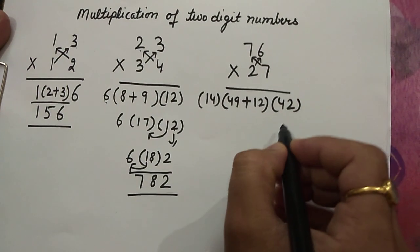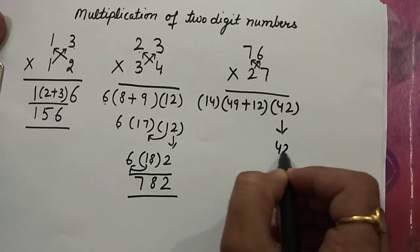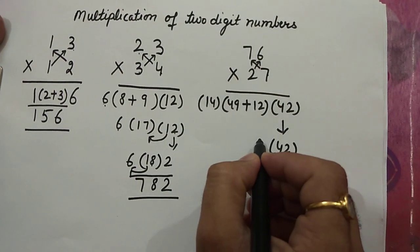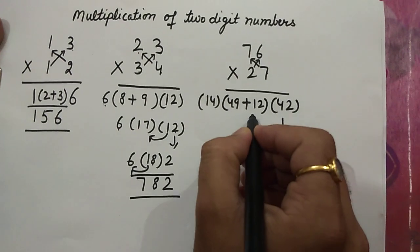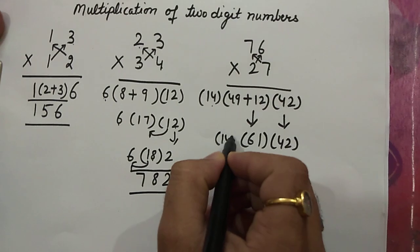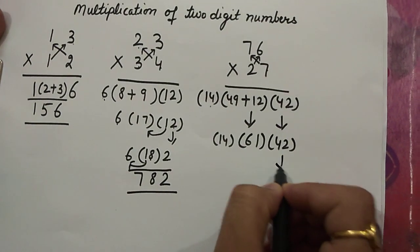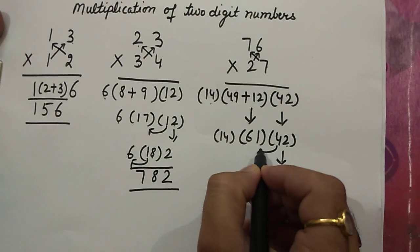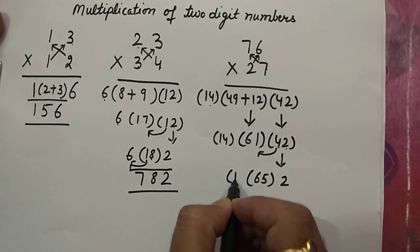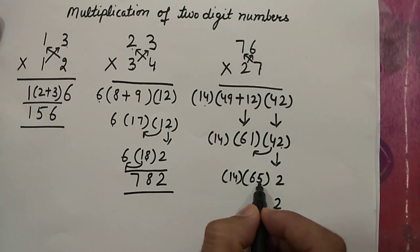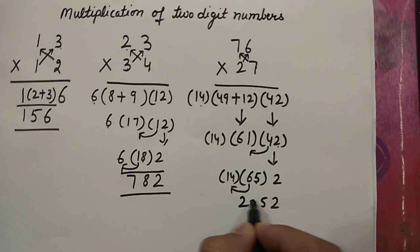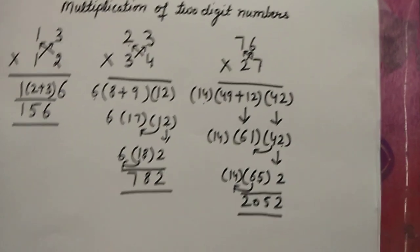Now what we need to do: write 42. Adding 49 plus 12, we get 61. And then I am having 14. Write 2 as it is. This 4 is added to 61, we get 65, then 14 as it is. Then 2, 5 as it is — this 6 is added to 14, we get 20. So the final answer is 2052.